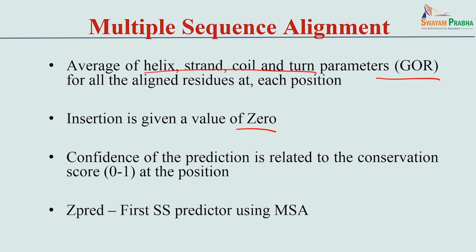If the confidence score (between 0 and 1) is very high - close to 1 - you get high confidence in the prediction. The first secondary structure predictor using multiple sequence alignment this way is Z-PRED.